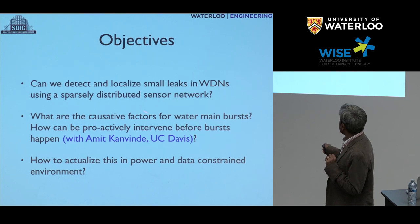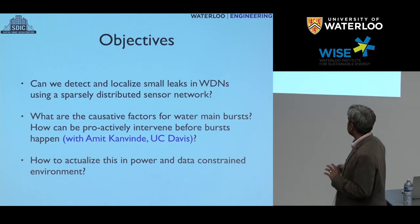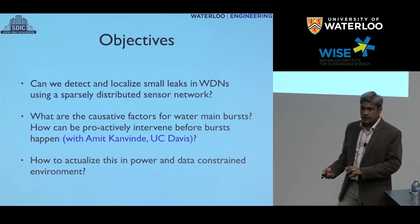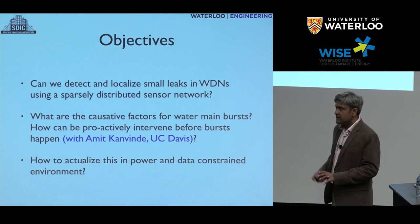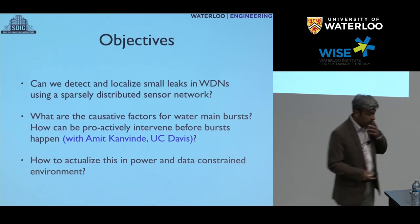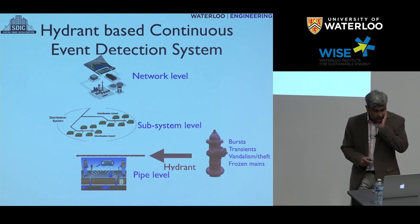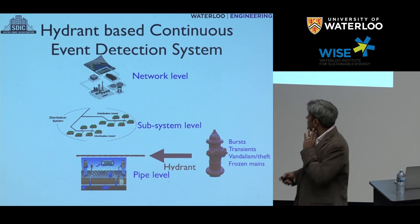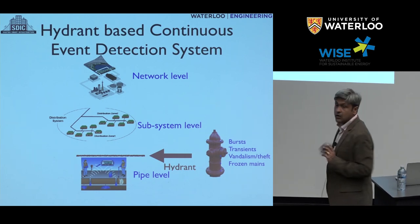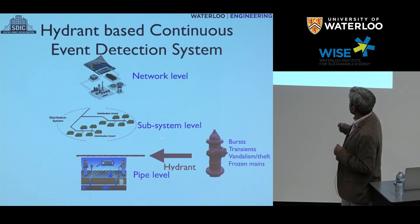We're also trying to understand the physics behind why these failures are happening and how to actualize this in a power- and data-constrained environment. Power is extremely difficult to get out in the field, especially when instrumenting hundreds of hydrants. The project we're working on is a hydrant-based event detection system — making these hydrants smart. The idea is to use these hydrants not at a network level or a pipe level, but somewhere between a pipe and a subsystem level. Typically, a water main burst today is reported by a citizen seeing flooding. The municipality sends an inspector with a listening device to locate the leak, then digs and repairs the pipe. It's very reactive.